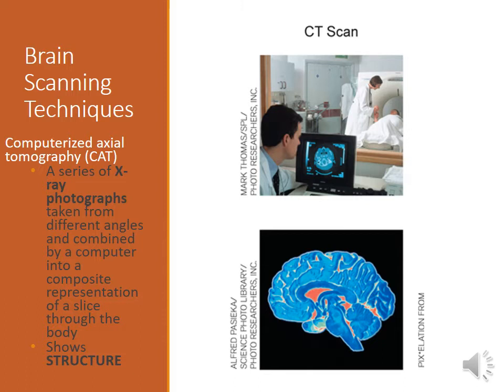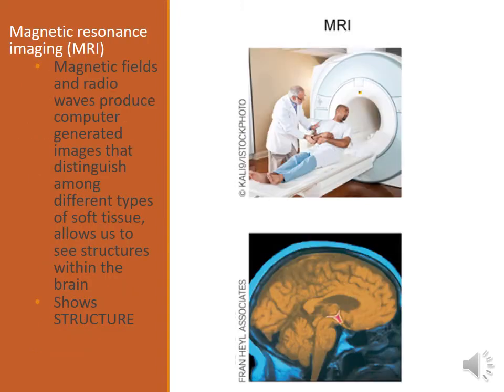CAT scans are great for detecting things like tumors. An MRI is a step up from a CAT scan and it doesn't use x-rays — it uses magnets. Magnetic fields and radio waves are used to detect the soft tissue of the brain and give us a 3D image. It takes pictures from left to right and top to bottom, two different planes, and what it lets us see is really good structure of the brain. You can get a very detailed and accurate picture of the brain using an MRI.